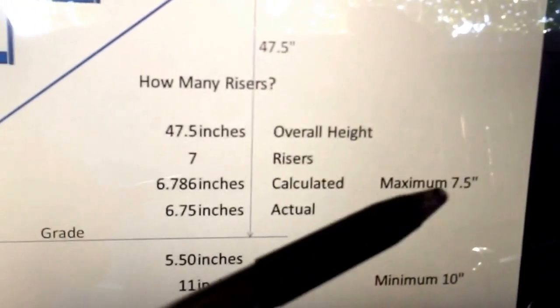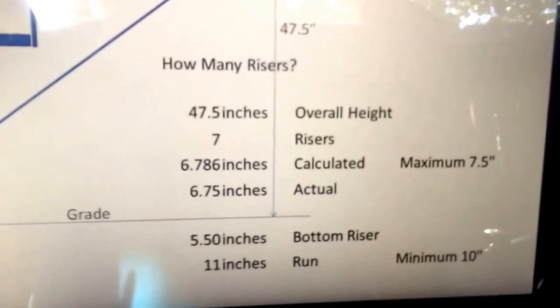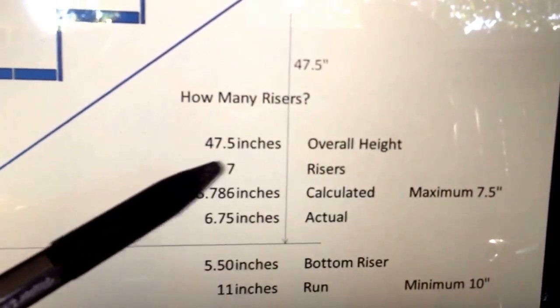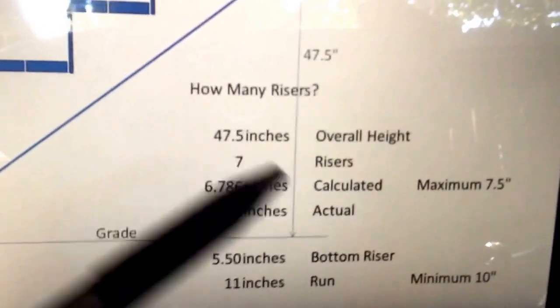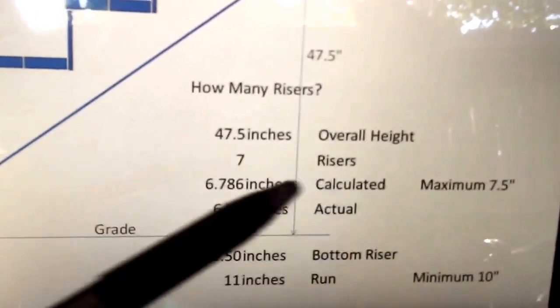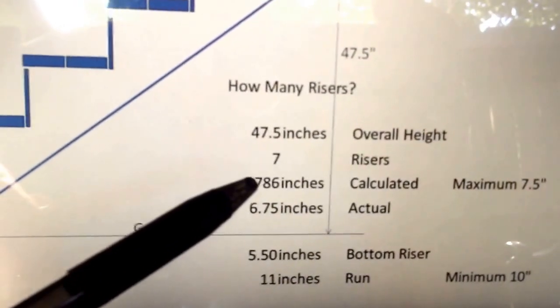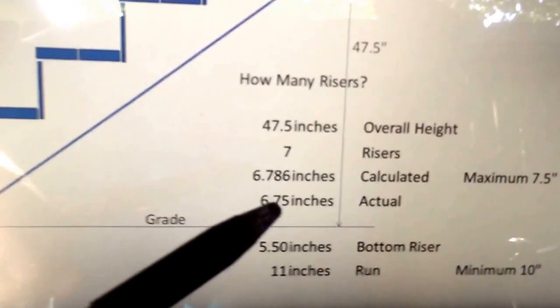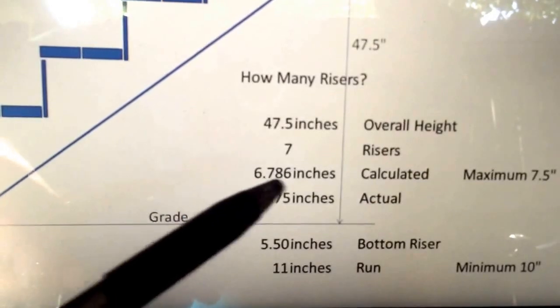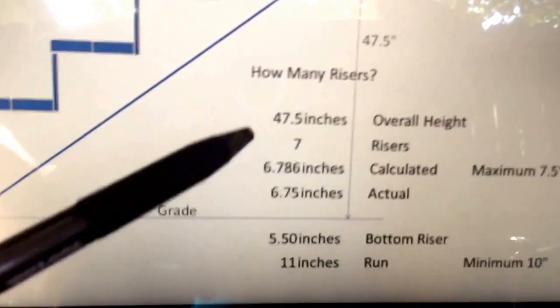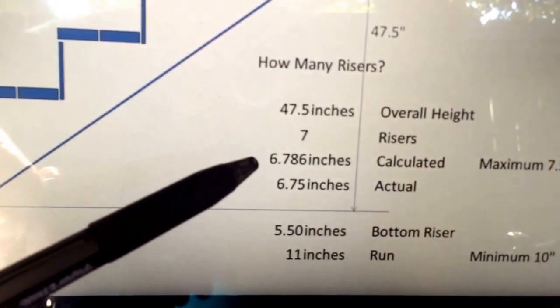You want a maximum of seven and a half. You don't want your step shallow. So basically whatever number here will allow you to achieve less than seven and a half, but not going any further below than you have to, then that's a good number. In this case, six, three quarters and about a 32nd over is an awkward measure. I don't measure that closely anyway. So we're going to say it's six and three quarter inches.